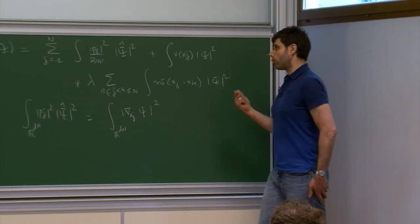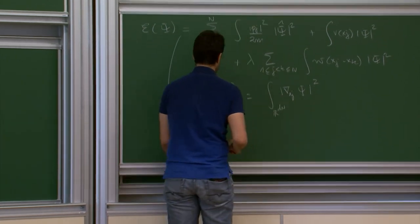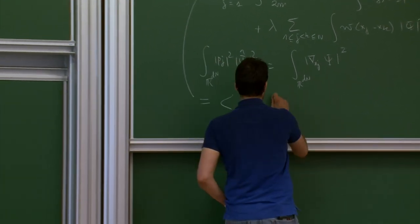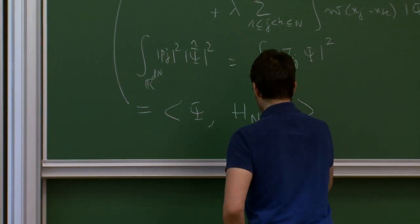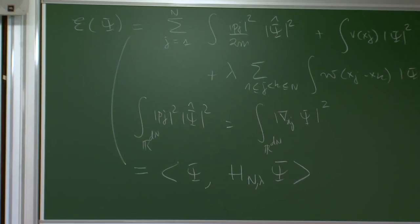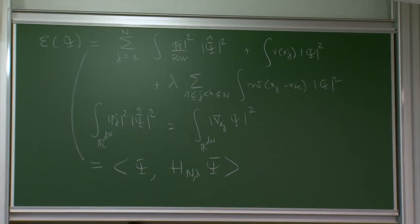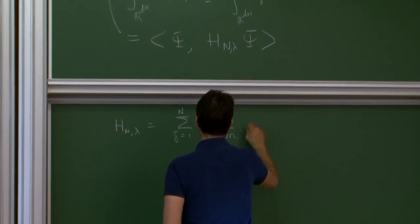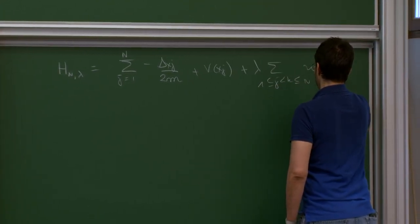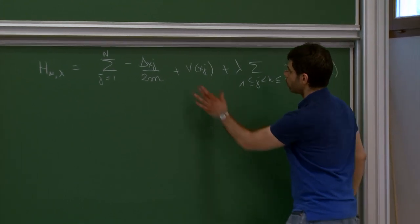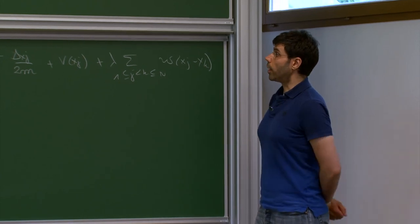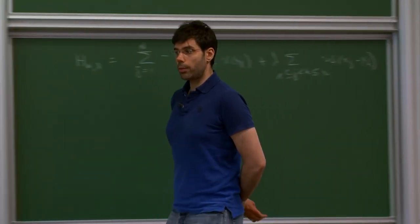So you have a term with a squared gradient, a term with V(x_j), and a term with W. This defines the Hamiltonian operator H_N^λ as the sum over j=1 to N of [−Δ_{x_j}/2m + V(x_j)] plus λ times the sum over j < k of W(x_j − x_k), where I write a function of x to mean the multiplication operator by that function in L².